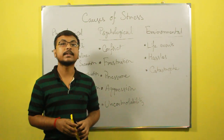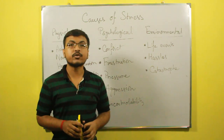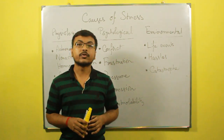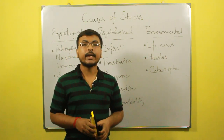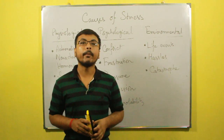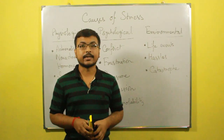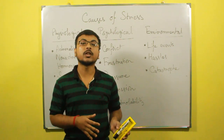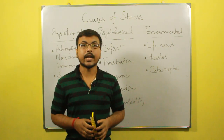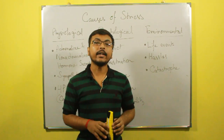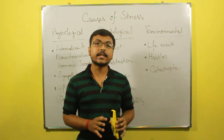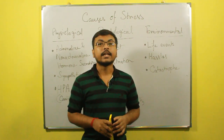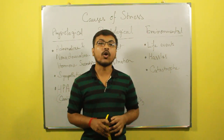The next causes of stress are environmental. The first environmental cause is life events — for example, death in a family is a major life event that causes stress. Next is hassle: our daily life hassles, such as being stuck in a traffic jam, are an environmental cause of stress. Catastrophe means any unpredictable large-scale destruction like earthquake, tsunami, or fire. These catastrophic events can also cause stress.